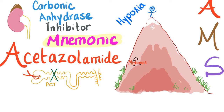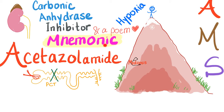Hey guys, it's Medicosis Perfectionellis one more time, continuing our series of lectures about fluids, electrolytes, and acid-base disturbance. In the previous two videos, we have talked about carbonic anhydrase inhibitors, as well as acute mountain sickness, where we use acetazolamide. Today, we have a great mnemonic about the carbonic anhydrase inhibitors. With that being said, now let's get started.